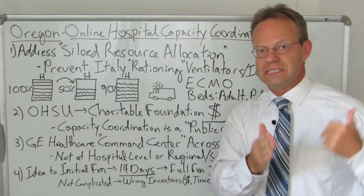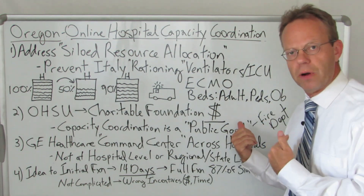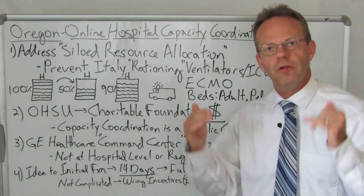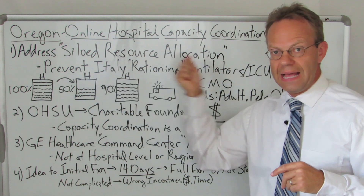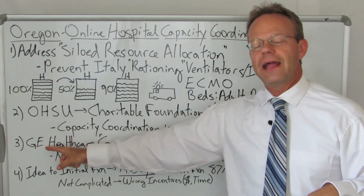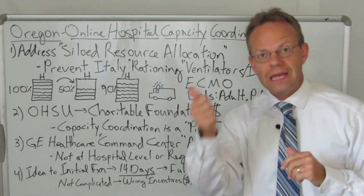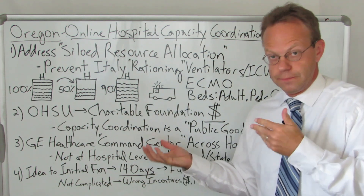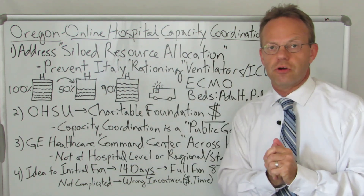Not everything in healthcare can be solved by the marketplace, and not everything in healthcare has to be run by the government. For some things in healthcare — not all — they're public goods. The allocation and coordination of beds across hospital systems is one of them. Oregon hired GE to do this because GE has expertise in creating command centers within hospitals — essentially a GE command center across hospitals. There's a dashboard showing how many beds and ventilators are available.